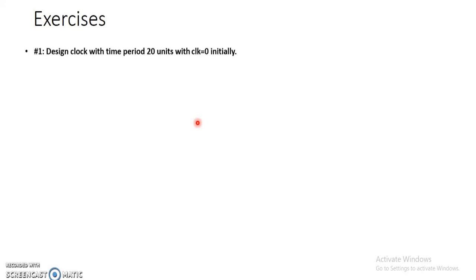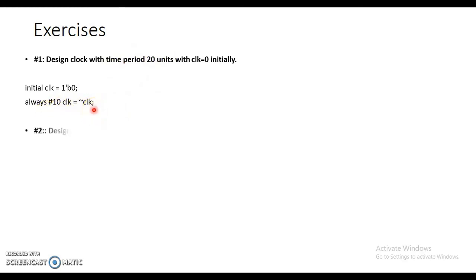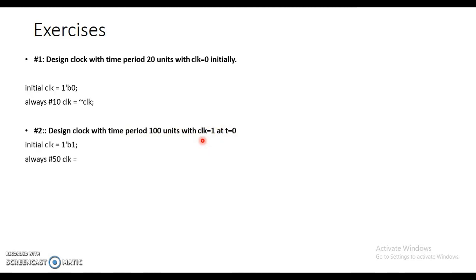Here are a few exercises. First: design a clock with time period 20 units, clock initially zero. The initial block sets clock to zero, and the always block toggles it after every 10 units. Second: design a clock with time period 100 units, clock equal to 1 at t=0. The initial block sets clock high, and within the always block we toggle after every 50 units.